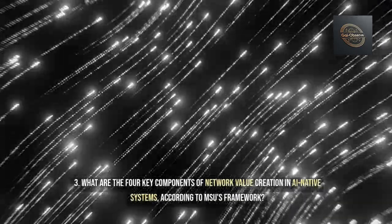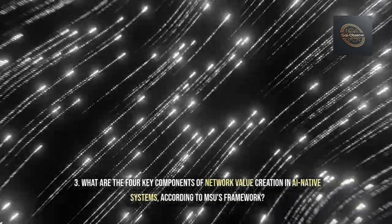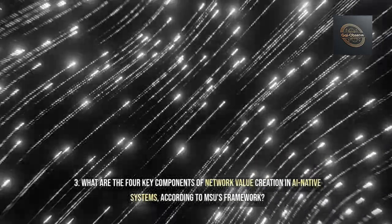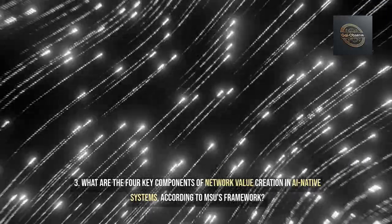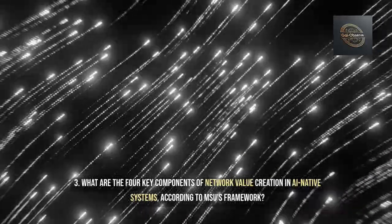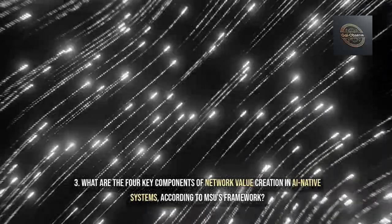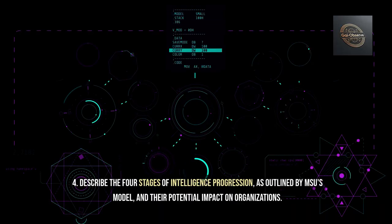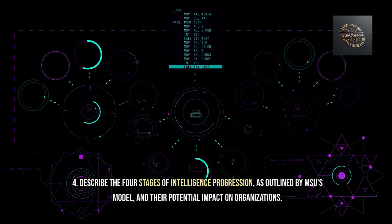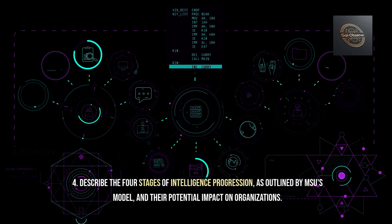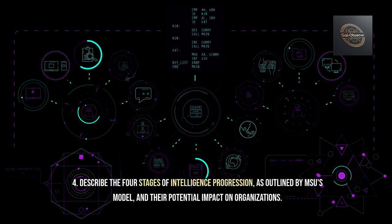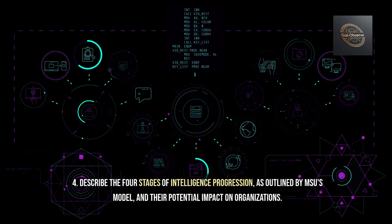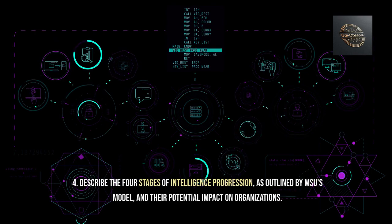Question 3: What are the four key components of network value creation in AI Native systems, according to MSU's framework? Question 4: Describe the four stages of intelligence progression, as outlined by MSU's model, and their potential impact on organizations.